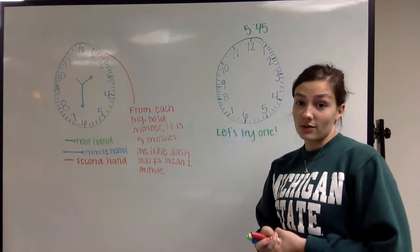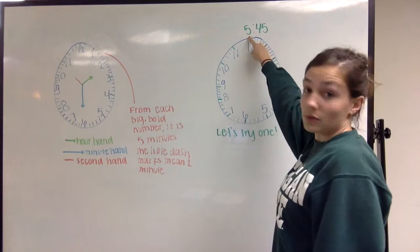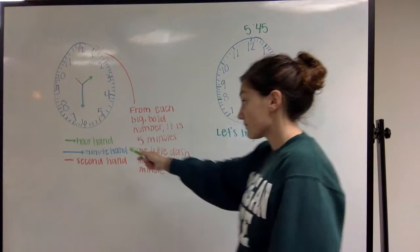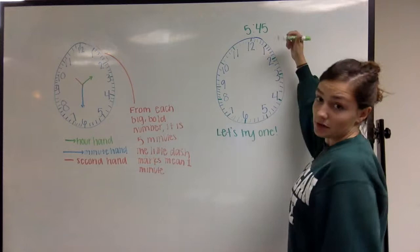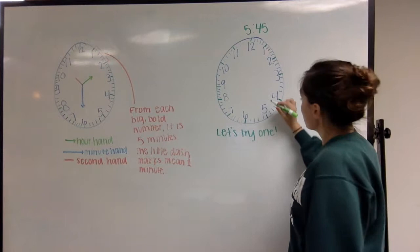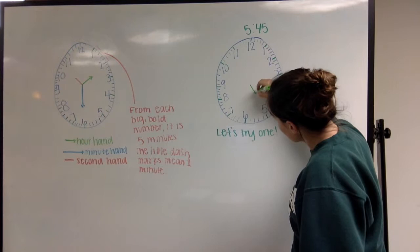Okay, so let's try one. The time up here says 5:45. And I know that because five is the hour, 45 is the minute. So we start with doing the hour, which is the lime green. So if it's five, you count to five on the clock. One, two, three, four, five. So you do a short little hand pointing to five. So that says it's five.